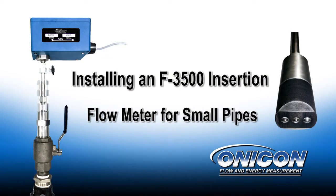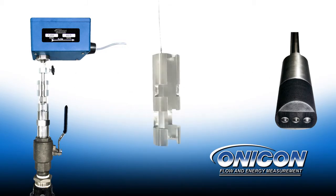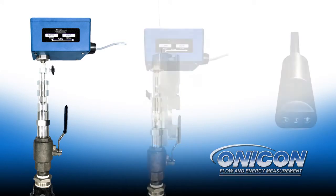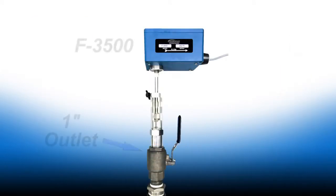Installing an F3500 insertion electromagnetic flow meter for small pipes using the provided insertion depth and alignment tool. This video assumes that the F3500 has already been threaded into the one-inch outlet on the pipe.